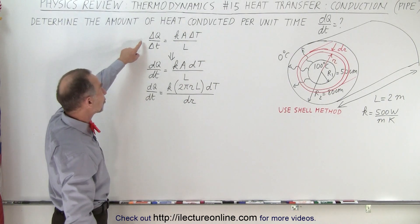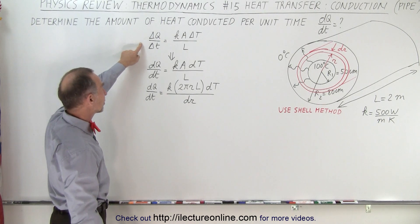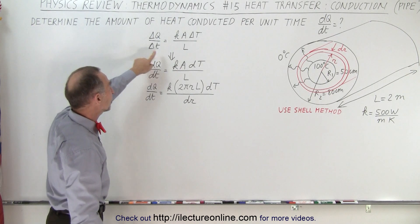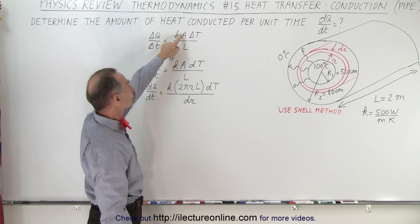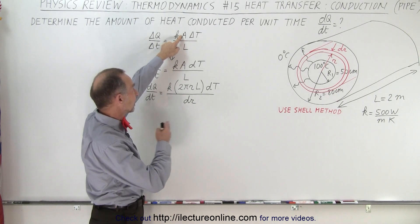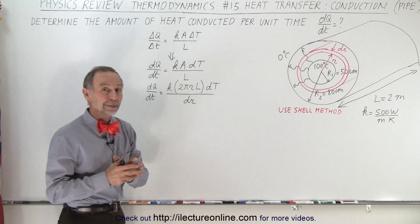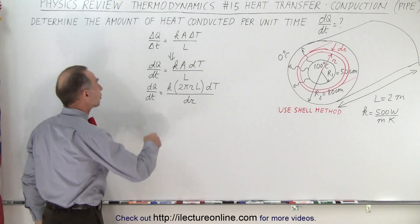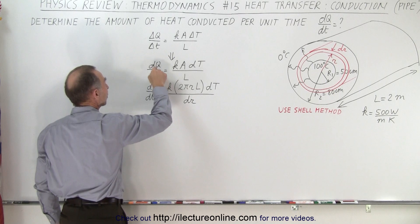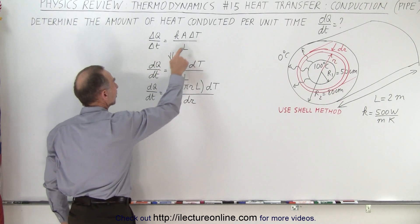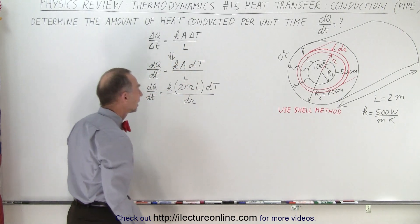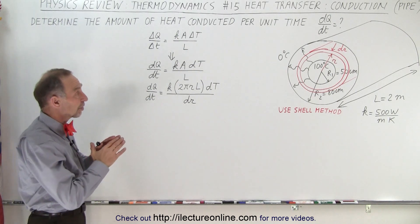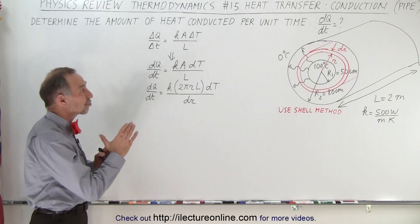We use the same equation as before: the amount of heat per unit time equals the heat conductivity constant times the cross-sectional area times the change of temperature divided by the length of the path. We change it to differential equation format, so we write dQ/dt, and instead of ΔT we write dT. Then we have to determine the cross-sectional area through which the heat travels.